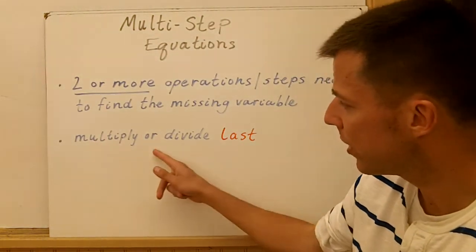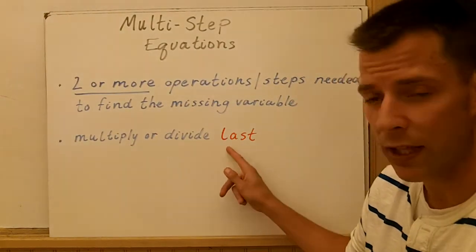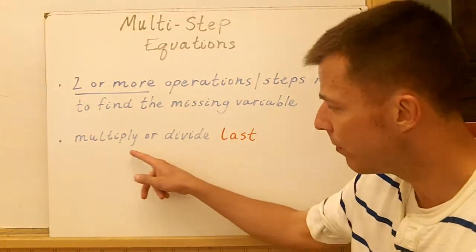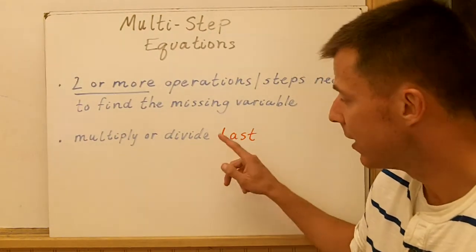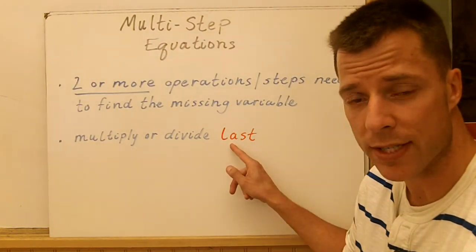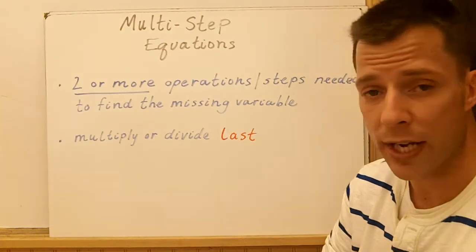The important thing you need to do is multiply or divide last. There's one case where that doesn't happen, I'll show you, but think about multiplying or dividing last when you solve these multi-step equations. So we're going to look at a few to solve.